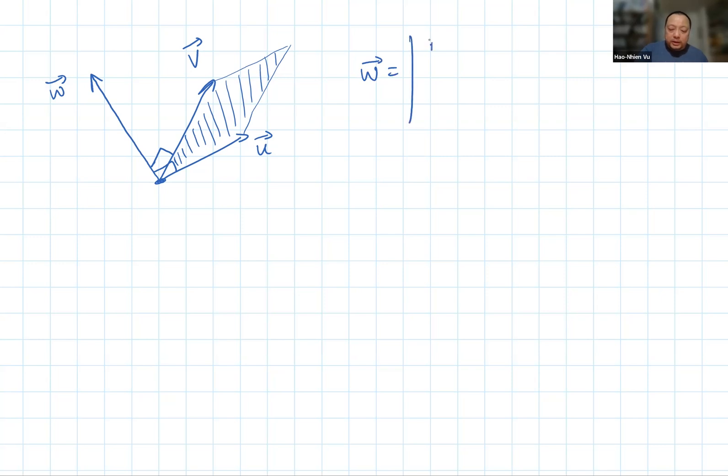Remember that the cross product is defined as the determinant i, j, k, x1, y1, z1, x2, y2, z2 where the x, y, z are the coordinates of the vectors. So I'm going to have to prove that this determinant is equal to that area.